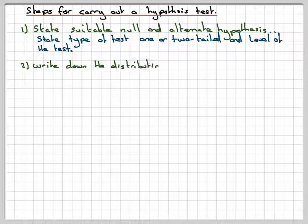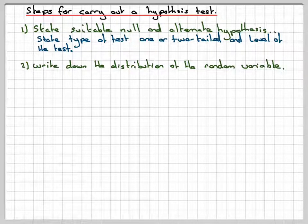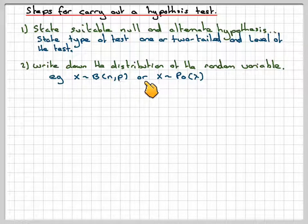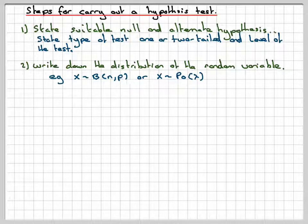Write down the distribution of the random variable. So depending on what null hypothesis we use, it will tell me that X would have to be binomial B(n,p). Because in my example, I used, I think, 20, and my P would have been 0.4. And the same if it's a Poisson type of problem.